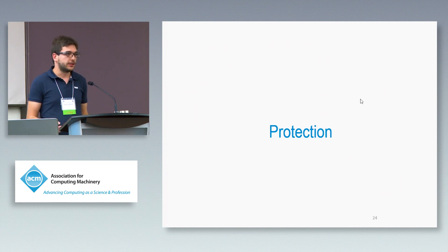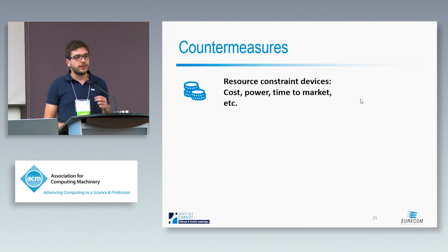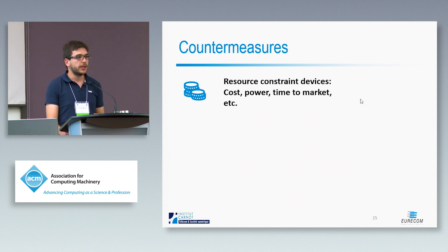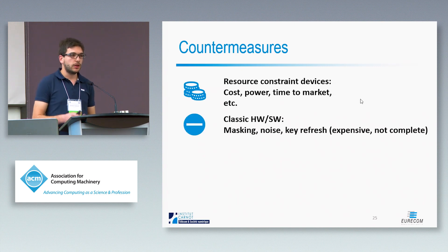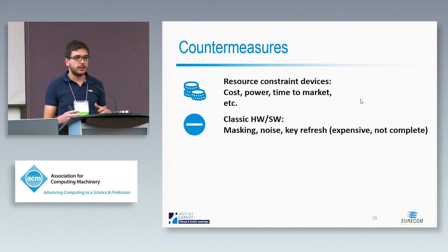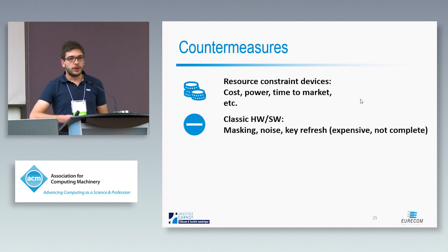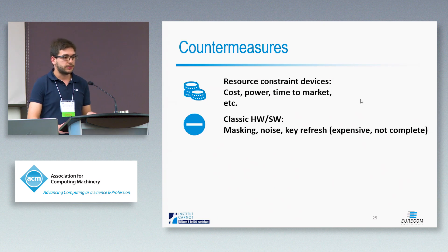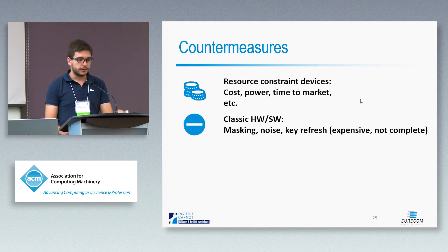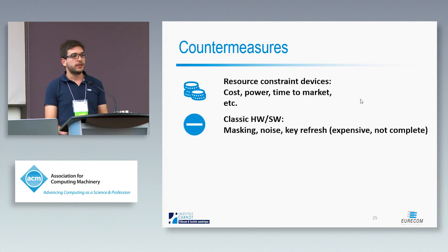We want to protect against this new side channel attack. We are talking about connected devices that are cheap and small, consume little power, and don't have resources for complex countermeasures. Classic hardware or software countermeasures basically consist in adding algorithmic or physical noise to decorrelate measurements from data being processed, or refreshing the key very often at the protocol level. But they may be too expensive for this kind of device, and importantly they try to protect a single cryptographic implementation but don't protect from the new kind of channels — if they leave some higher-order leak, that can be exploited again via radio and an arms race can start.